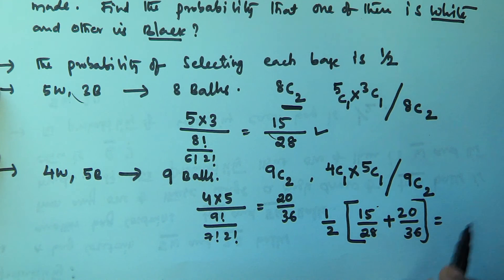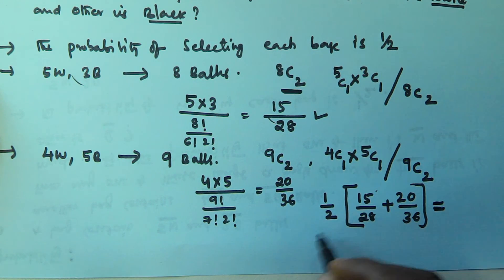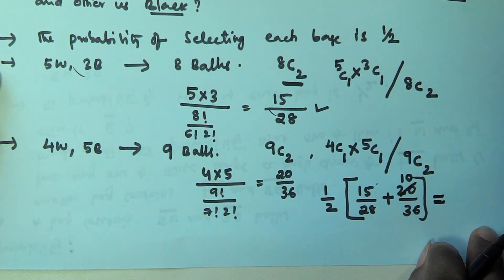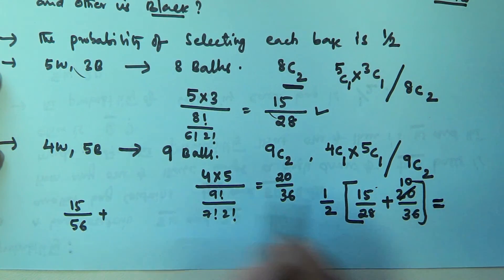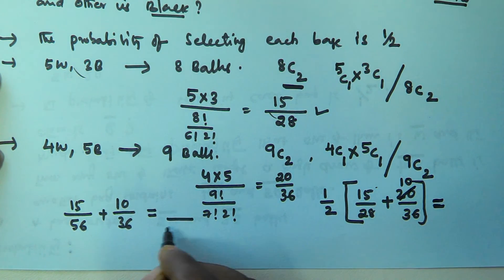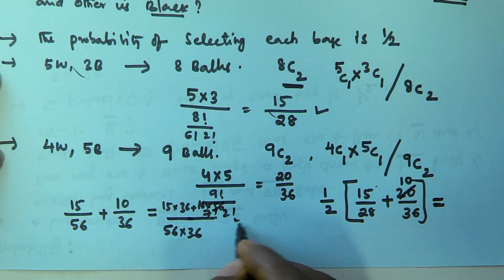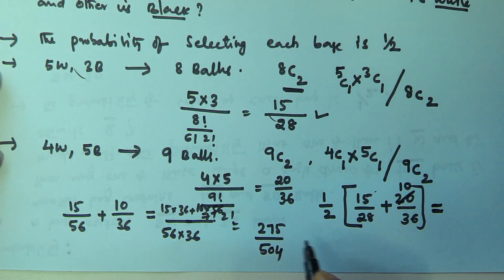Solving this: 1/2 × 15/28 gives 15/56, and 1/2 × 20/36 gives 10/36. Combining these: (15 × 36 + 10 × 56) divided by (56 × 36). By calculating this we get 275/504. So 275/504 is the probability of selecting one white ball and one black ball from any one of those two bags.